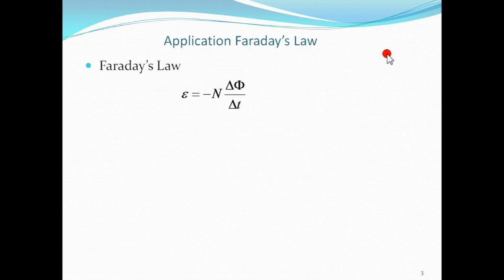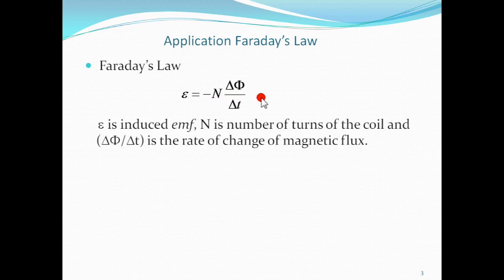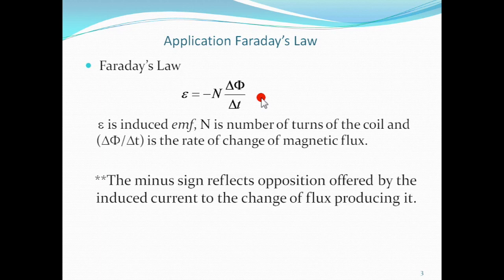In the previous lesson, we have seen that the EMF induced by the process of electromagnetic induction is given by E equals minus N change of flux over change of time, where N is number of turns of the coil, delta phi over delta t is the rate of change of flux, and this negative sign is for Lenz's law. The minus sign reflects the opposition offered by the induced current to the change of flux producing it.